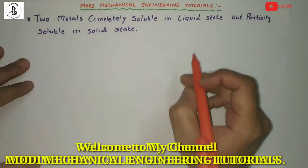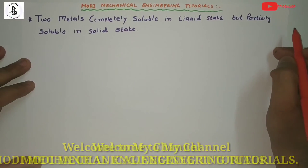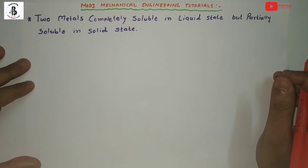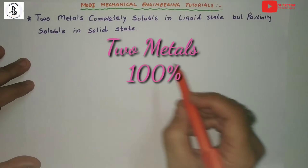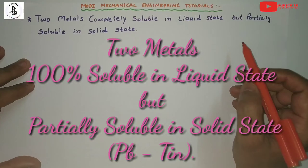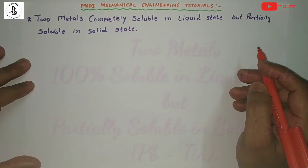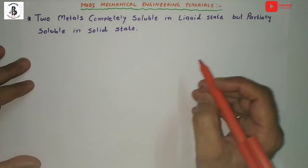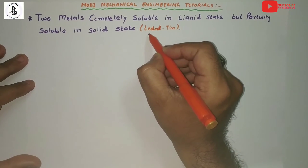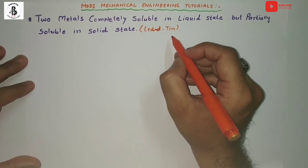Welcome to my YouTube channel Modi Mechanical Engineering Tutorials. In this video I would like to explain two metals which will be completely soluble in liquid state but partially soluble in solid state, with an example of lead and tin.